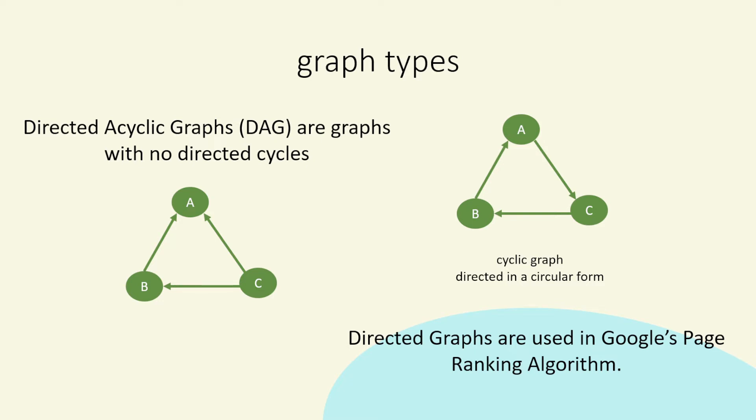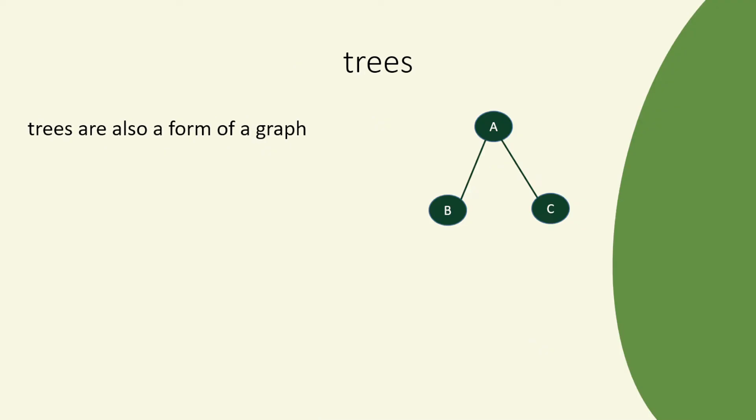We can call that a directed acyclic graph because it's not going in a circular direction. As opposed to the graph on the right, we can see A to C to B to A. This is a circular form, so it's a cyclic graph. Directed graphs are used in things like Google's page ranking algorithm. So trees are also a form of a graph.